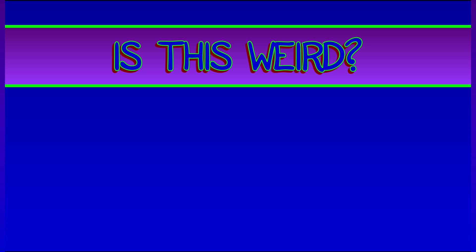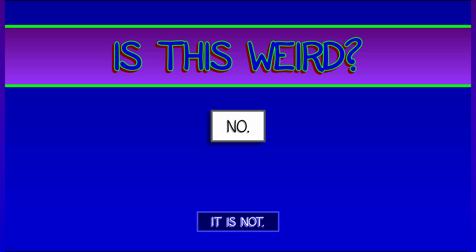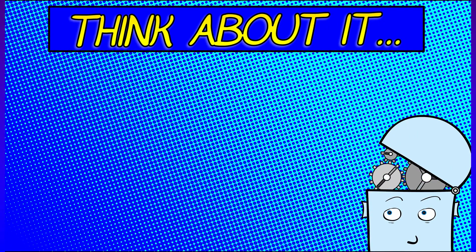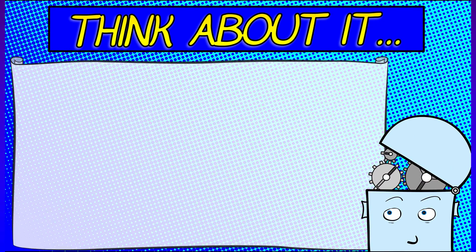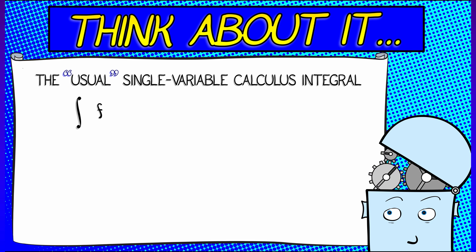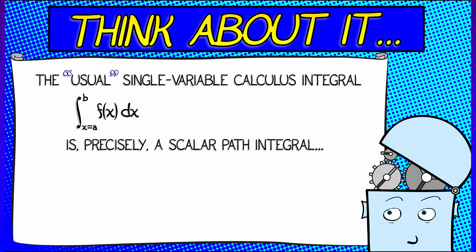This is probably a good time to step back and ask that all-important question: is this all weird? And the answer is no. It is not weird. This is not unfamiliar at all. If you think back to what you learned in single variable calculus, the usual integral — the integral of f of x dx, as x goes from a to b — is precisely a scalar path integral.